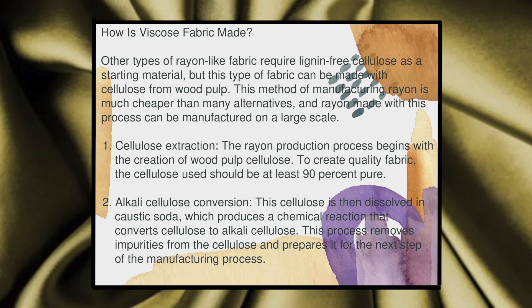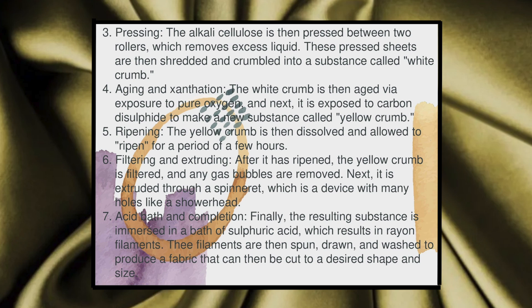The rayon production process begins with the creation of wood pulp cellulose. To create quality fabric, the cellulose used should be at least 90% pure. This cellulose is then dissolved in caustic soda, which produces a chemical reaction that converts cellulose to alkali cellulose. This process removes impurities from the cellulose and prepares it for the next step. The alkali cellulose is then processed between two rollers, which removes excess liquid. These pressed sheets then stretch and crumble into a substance called white crumb.